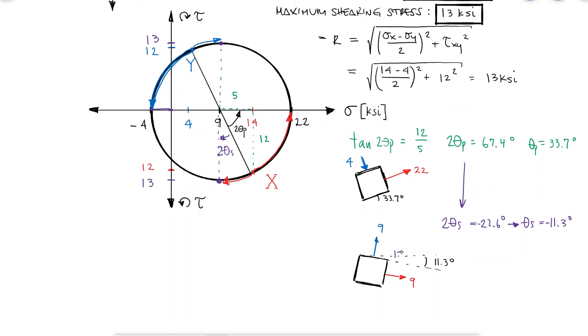The shearing stress would be 13, a vector that would make rotate the stress element counterclockwise for the face of x, and a vector that would try to rotate the stress element clockwise for the face of y.